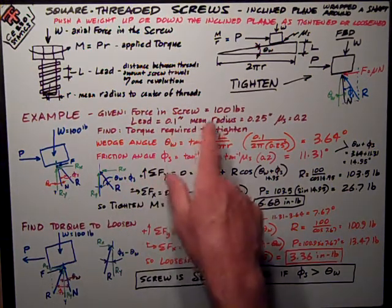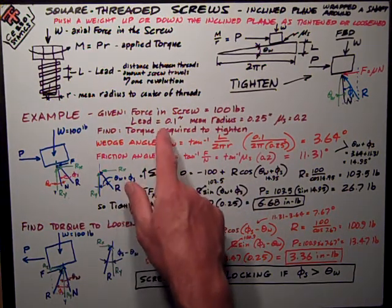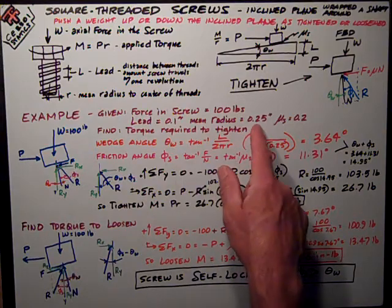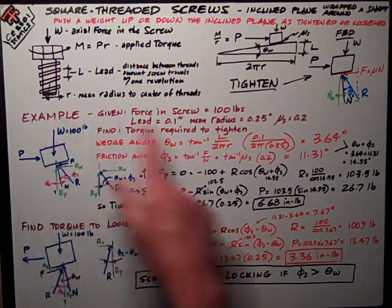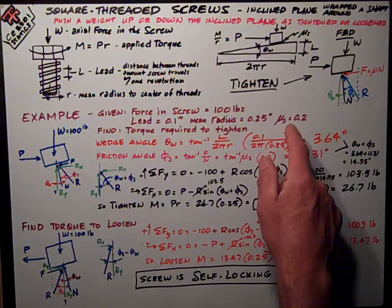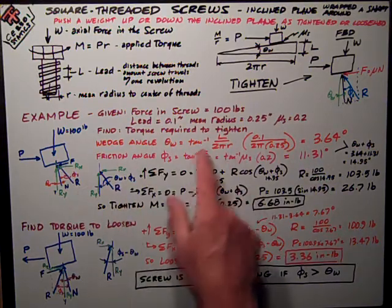Here's an example. Given a force in the screw of 100 pounds and a lead of 0.1 inches, mean radius of 0.25 inches, and the coefficient of friction of 0.2, we want to find the torque required to tighten it.